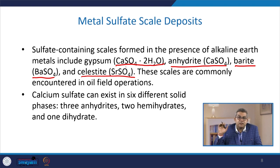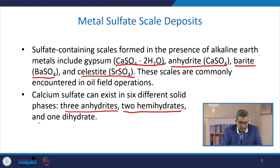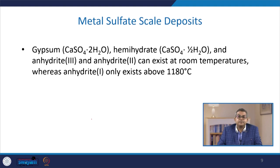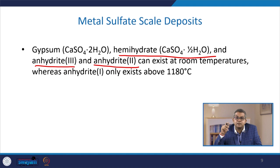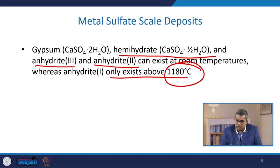Calcium sulphate can exist in six different solid phases: three anhydrites, two hemihydrates, and one dihydrate. Gypsum or hemihydrate (CaSO₄·½H₂O), anhydrite 3, and anhydrite 2 can exist at room temperature, while anhydrite 1 only exists above 1180°C.